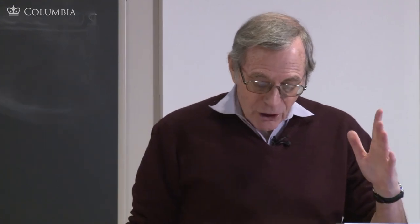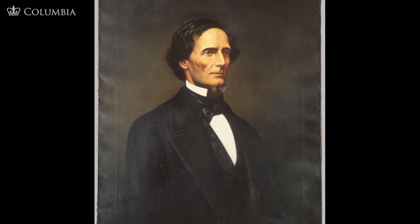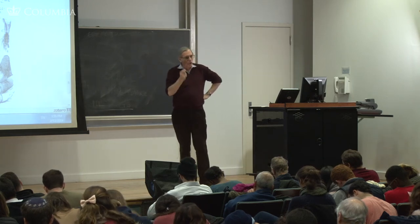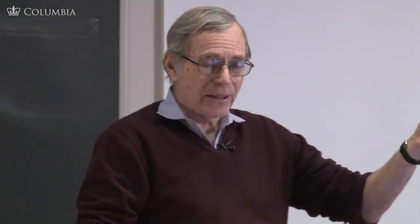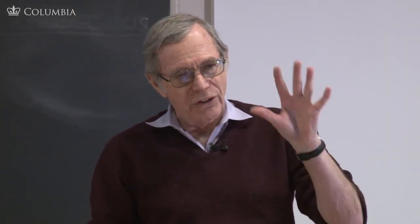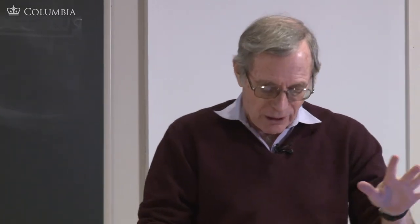Finally, early in 1860, Jefferson Davis introduces in the Senate a series of resolutions stating this as the Southern position: a slave code for the territories. Congress must pass laws guaranteeing slavery in all the territories of the United States. This was obviously a repudiation of the Republican position and also a repudiation of Douglas's popular sovereignty. All subsequent territories must be slave territories, according to Davis's resolution.